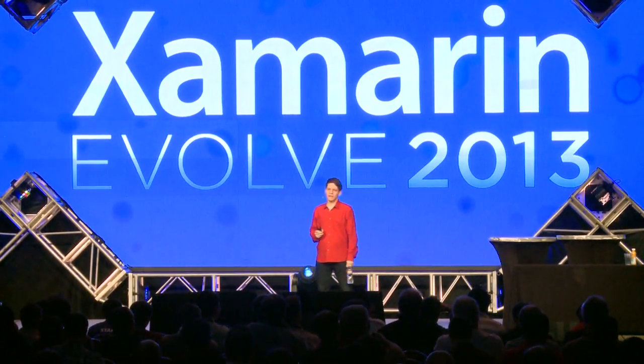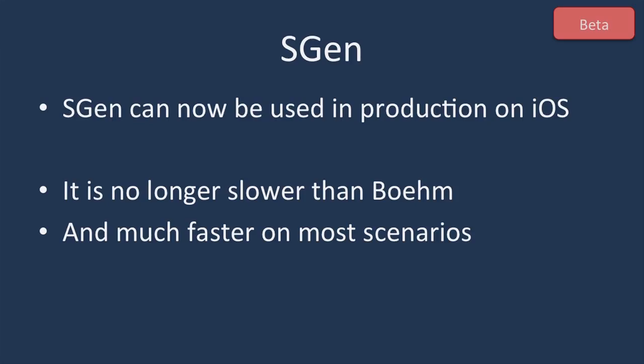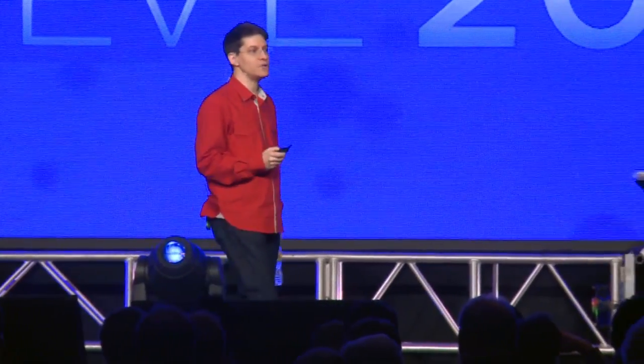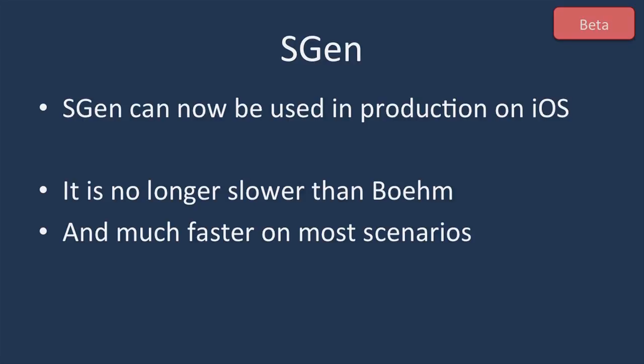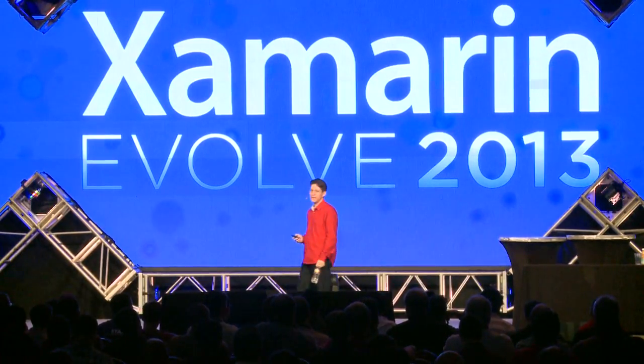The beta uses a new garbage collector called S-Gen. The 'S' used to stand for 'simple,' but today it's no longer simple — it's a very sophisticated, generational, split-nursery, all-generation, effectively three-generation, multi-threaded garbage collector with thread-specific pools. Now we have concurrent garbage collection, so your application can keep running even while GC happens in the background. We're enabling it as a supported feature because it's no longer slower than Boehm in any scenario — in many cases it's much faster. It's a precise garbage collector, so it reduces the memory footprint. Android has always used S-Gen, and now we're bringing it to iOS.